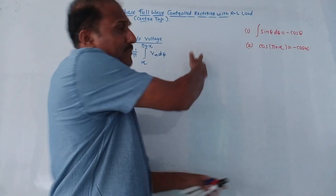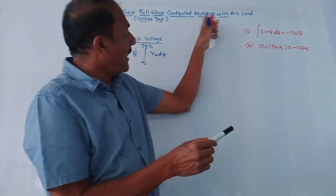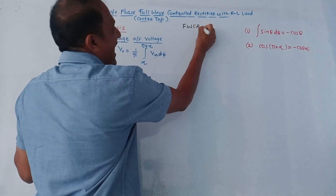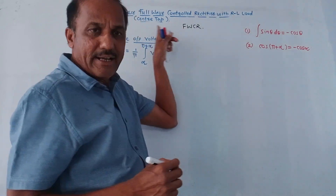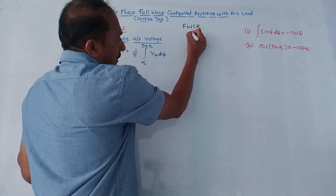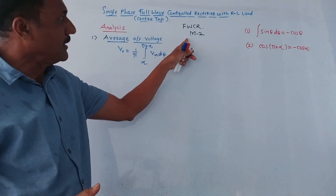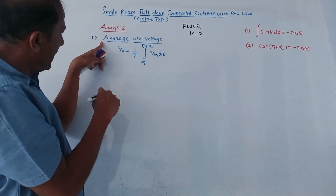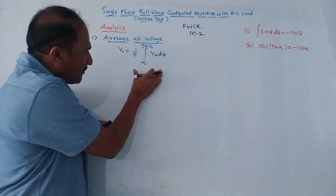This circuit is also called full wave converter with RL load and center tap connection, abbreviated as FWCR — full wave controlled rectifier with RL load and center tap connection. One more name is M2 connection, because we are using a center tap transformer, also called midpoint or M2 connection. Now let us discuss the analysis.